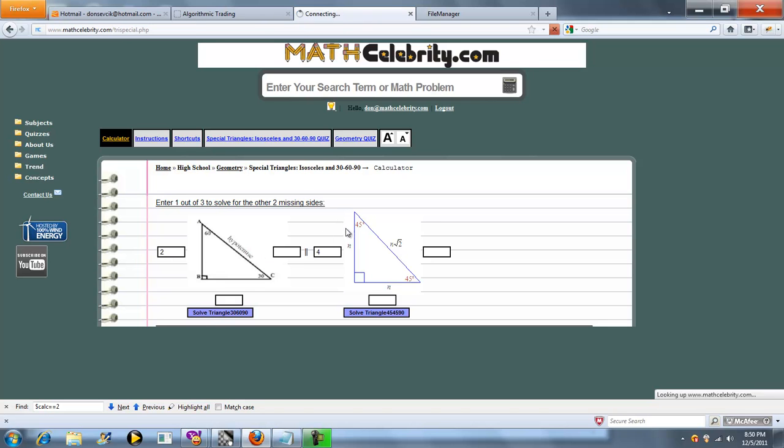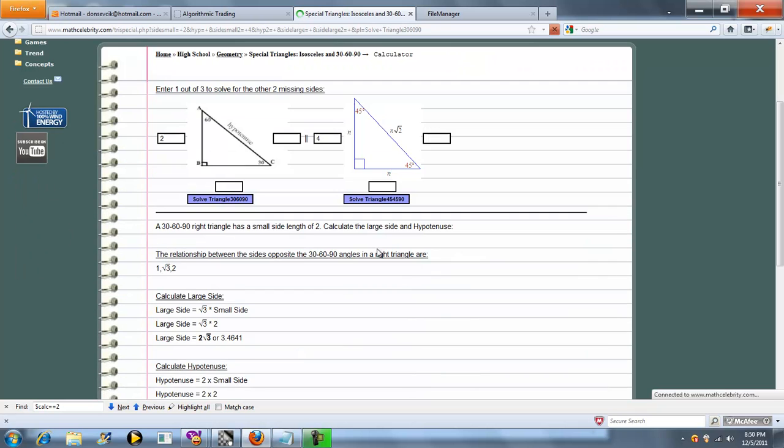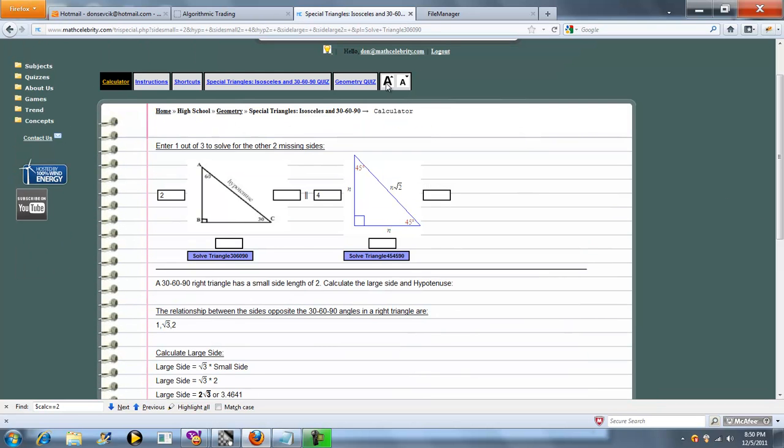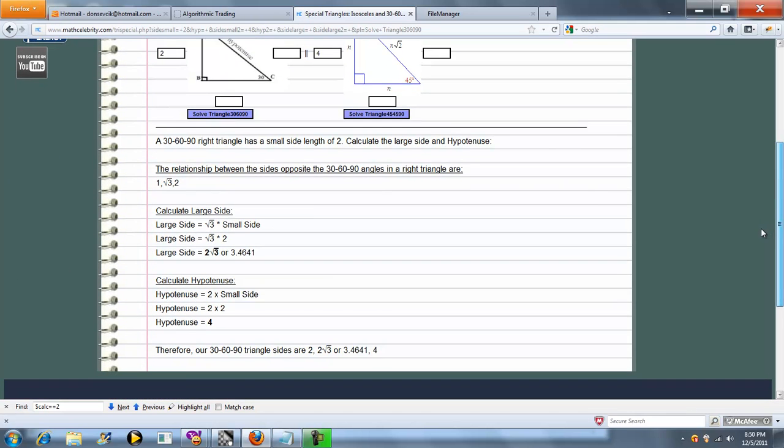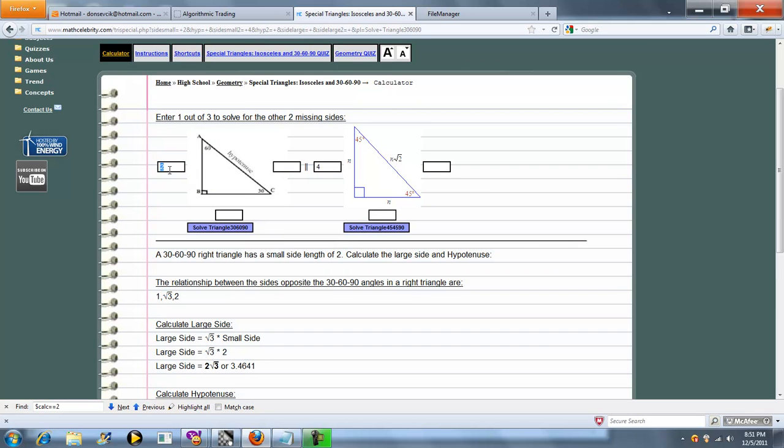So you basically do what the instructions say, enter 1 out of 3. So we'll do small side. It uses the 30-60-90 side ratios, calculates the large side first, and then the hypotenuse. And then at the end, basically summarizes your three sides.